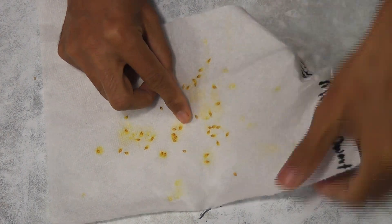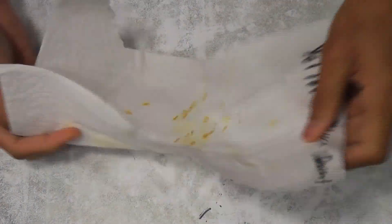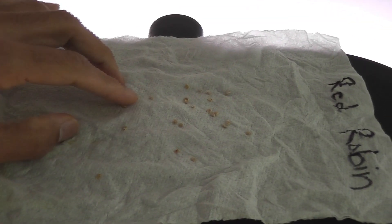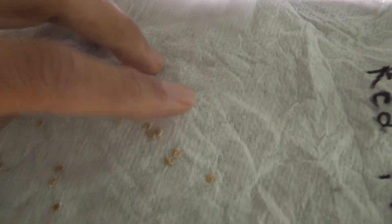Now I am collecting the seeds from the paper towel to store them. These are the red robin tomato seeds I recently extracted. They are drying up here. I will be collecting these seeds and store them in a day or two. I wrote the variety name on the paper towel so there won't be any confusion.